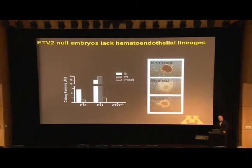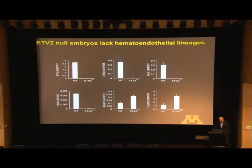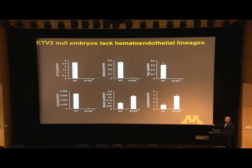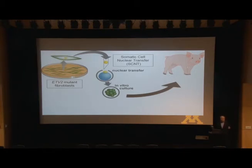We also undertook functional assays using colony forming unit assays and methylcellulose assays at two different ages—E18 and E21. Wild type embryos can form all three lineages, which are completely absent in the ETV2 mutant. Transcript analysis using qPCR confirmed mutant embryos lack ETV2, lack vascular transcripts, lack blood transcripts, and show an induction of the cardiomyocyte-specific gene program. These results validated that ETV2 mutant pigs lack hematoendothelial lineages.